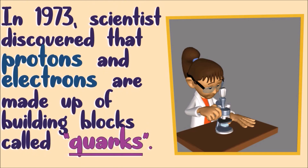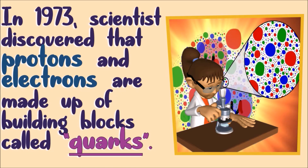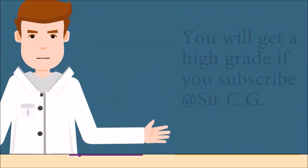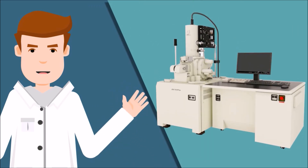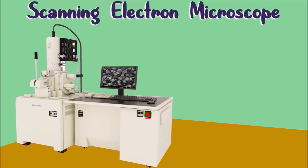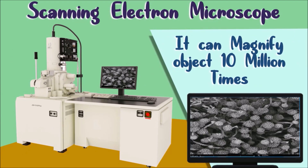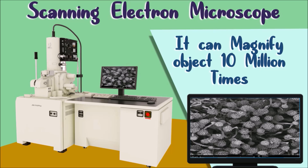In 1973, scientists discovered that protons and electrons are made up of particles called quarks. Scientists use special instruments to study atoms. They use scanning electron microscopes, which can magnify objects 10 million times, to study a single surface of an atom with a beam of electrons.